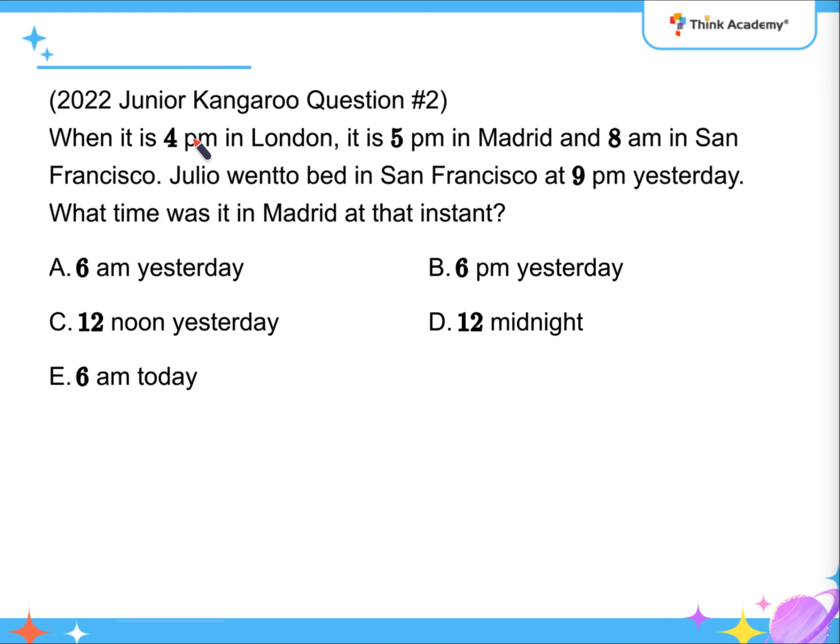For the second one, when it's 4pm in London, it's 5pm in Madrid, and 8am in San Francisco. So, what's the time difference between these cities? If it's 8am in San Francisco, 5pm in Madrid,